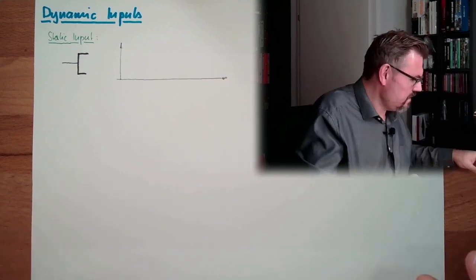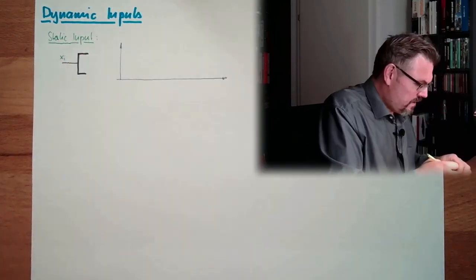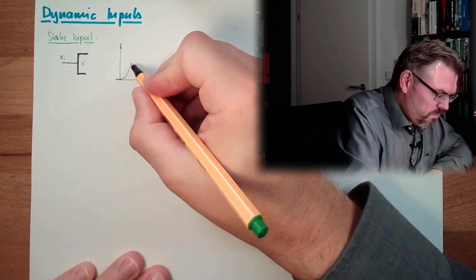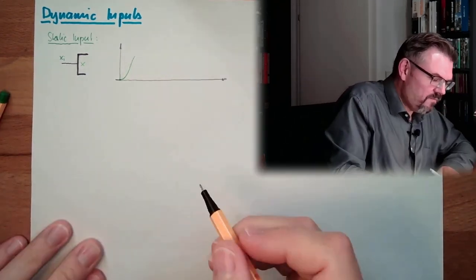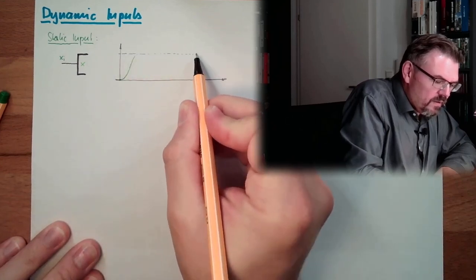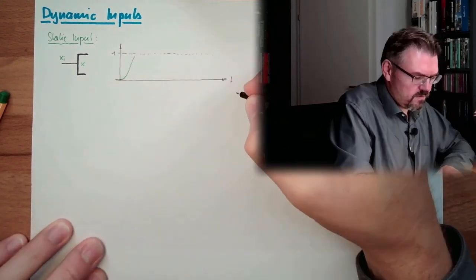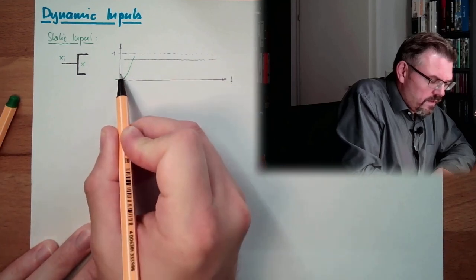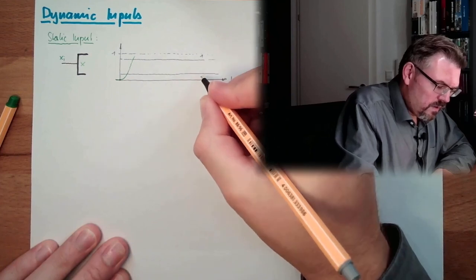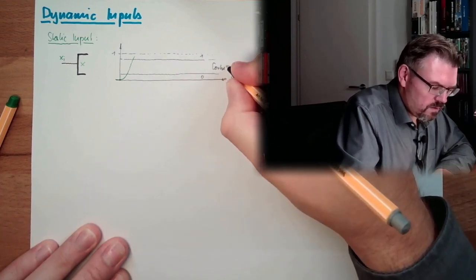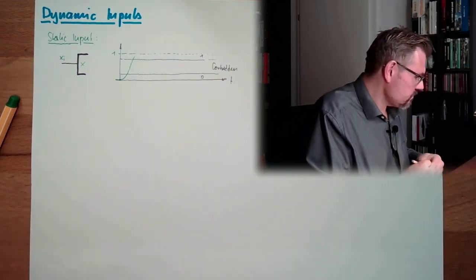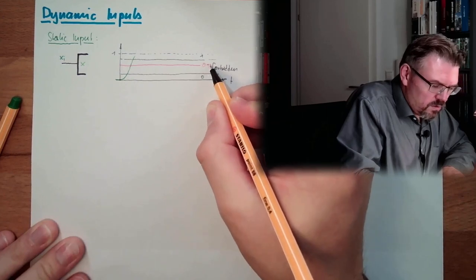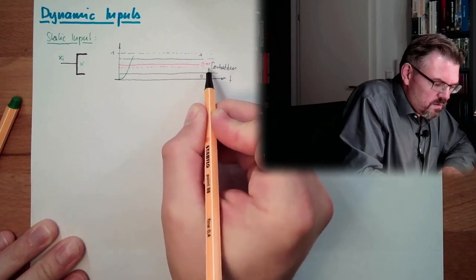So we said there is an input xi, and there is an interpreted input x here. And then if this xi is going up, here we have somewhere the logically 1 level, where the element is designed for. Then we have somewhere here guaranteed levels. And down here we have also guaranteed, here we have 1, we have 0, and this is the forbidden area, we talked about this. Then we have somewhere a trigger level. We have a trigger level from 0 to 1, and we have somewhere a trigger level from 1 to 0.